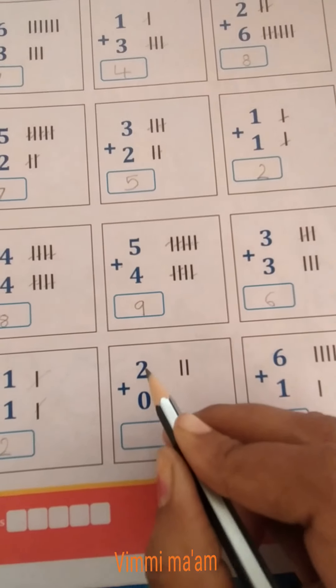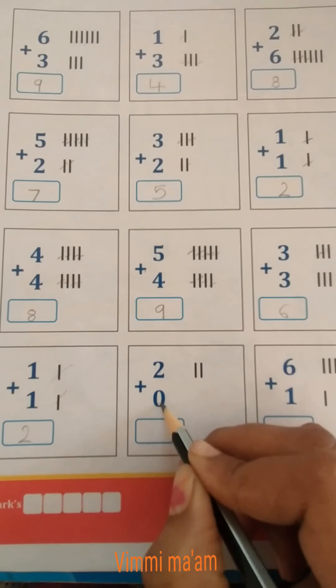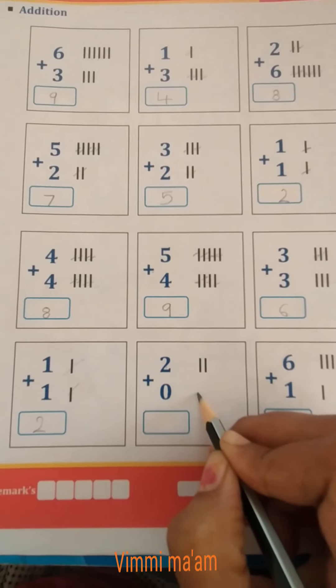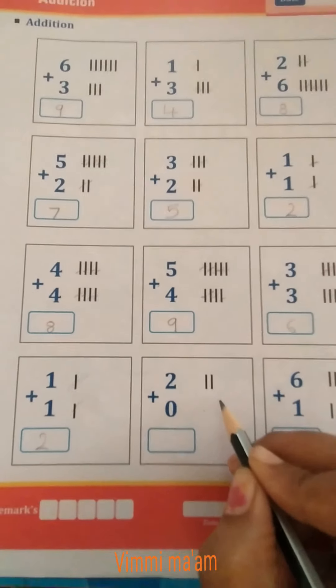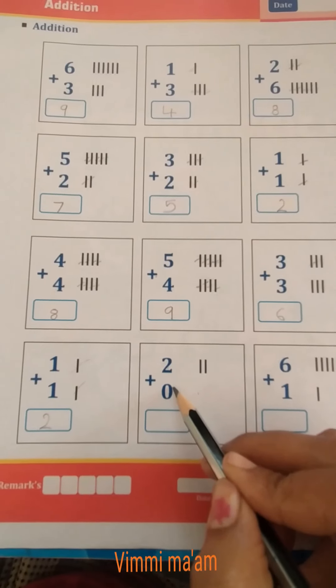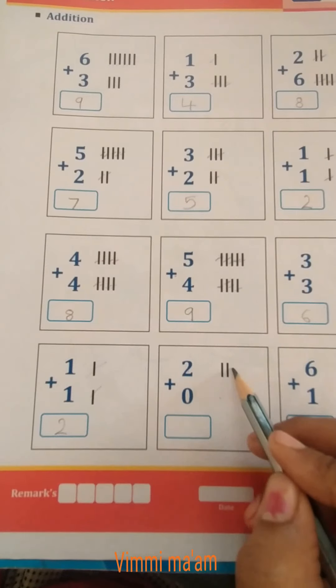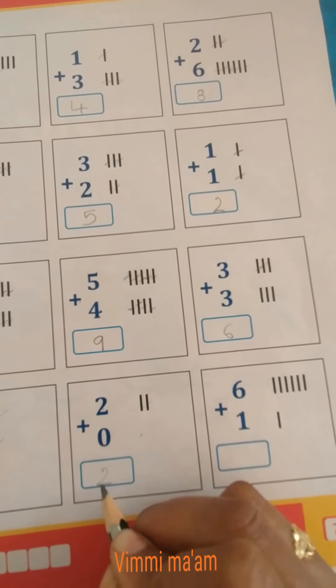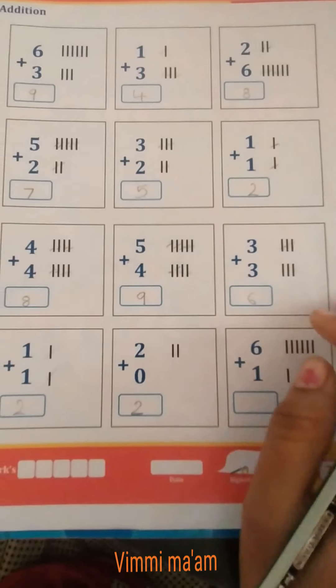2 plus 0. For 2, we draw 2 lines. For 0, we draw no lines because 0 has no value. Here we have no lines for 0, so we write number 2.